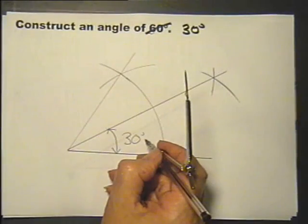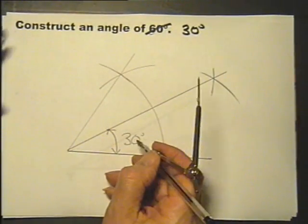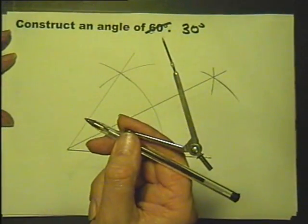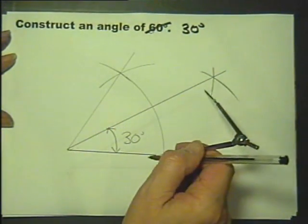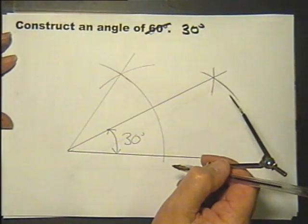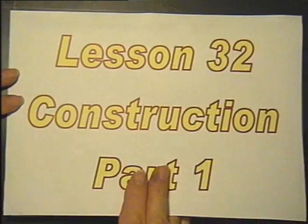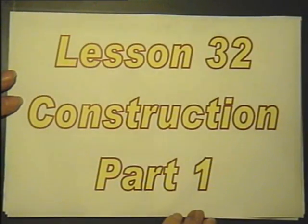These are constructions, basic constructions, and the whole point is to construct you must be using a pair of compasses. You must leave your arcs so they're nice and clear for the examiner to give you your marks for. Lesson 32, constructing part one.